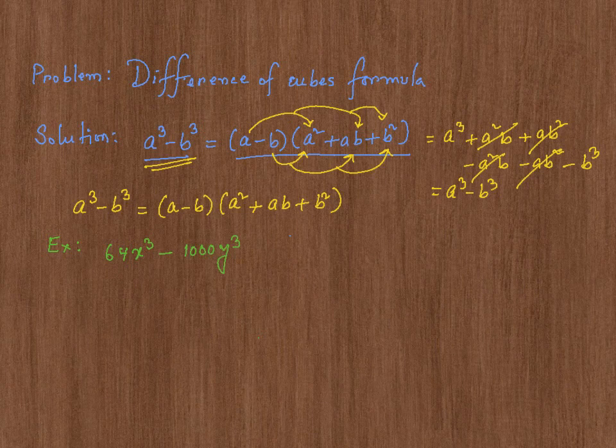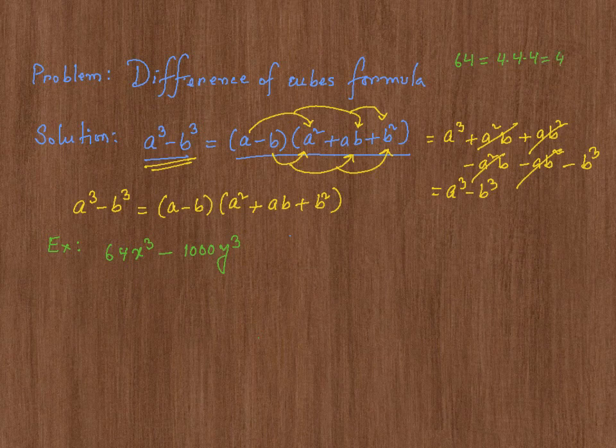Now, 64 is 4 times 4 times 4, which is 64, which is 4 cube. So 64 x cube, I could rewrite it as 4x whole cube.